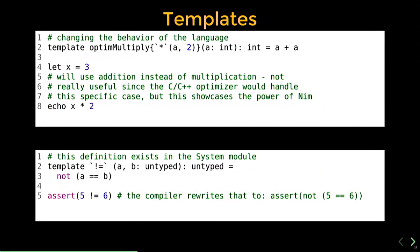Another example: we can write a rule that pattern-matches source code where an integer is multiplied by two, and that template gets automatically triggered to rewrite the multiplication as summing the integer with itself — illustrating the power of NIM. Also, the not-equals operator template is defined in terms of equality, which is actually what happens in NIM's system module — a really nice way to reuse code.